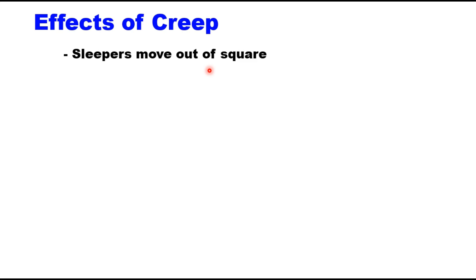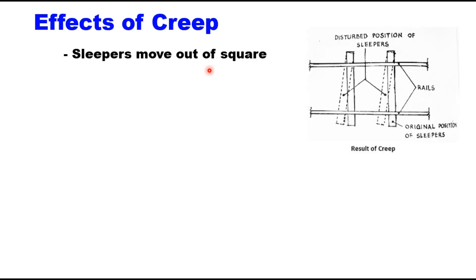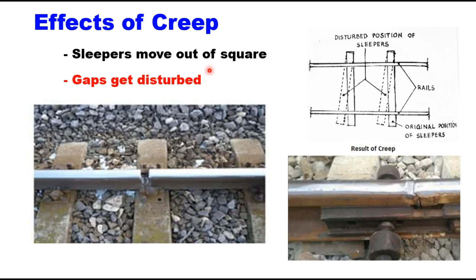The effects of creep are many and very serious. First, sleepers move out of their square — the force exerted by a moving rail is sometimes so large that if sleepers are not properly embedded in the ballast, they also move out of position, affecting the gauge and alignment of the track, which can result in bad riding or even derailment. Second, gaps get disturbed — expansion gaps open to their limit at the point where creep starts, and in the direction of creep they close completely, preventing expansion of the rail due to temperature change, which can result in buckling of the track.